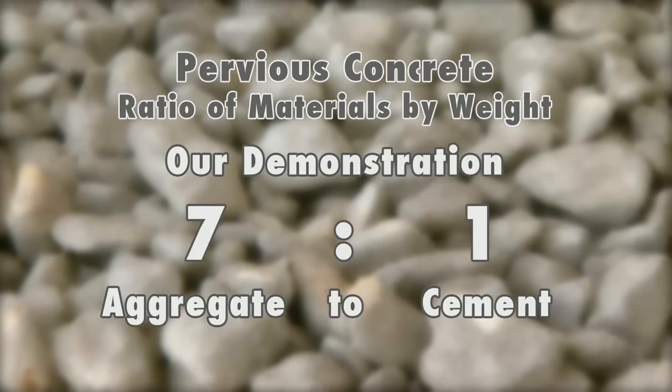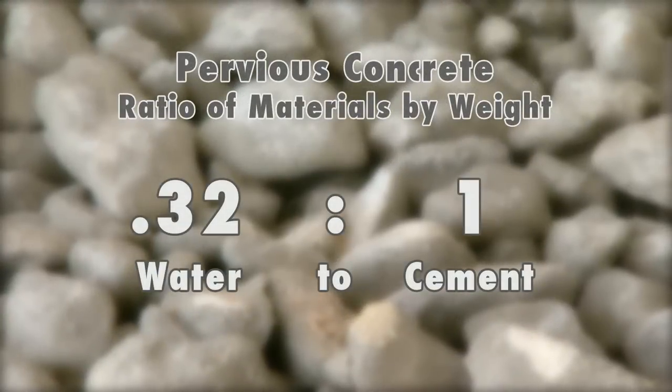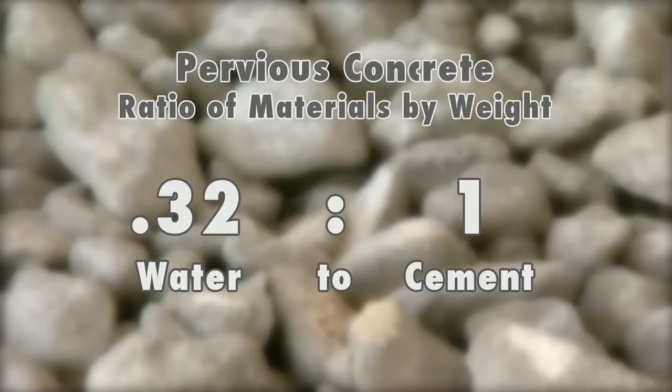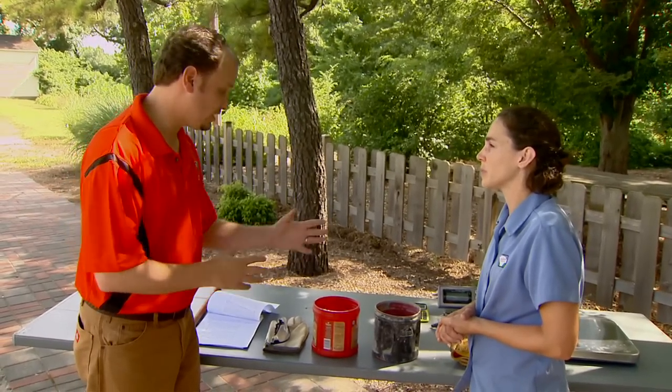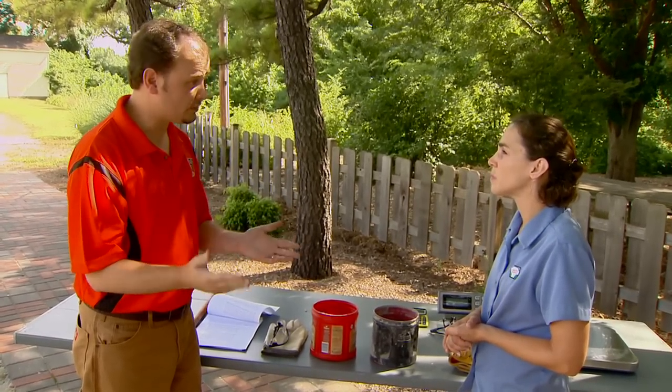So that's seven pounds of aggregate to one pound of cement. To measure the amount of water, we're going to have approximately 0.32 pounds of water per pound of cement. It's really important to get that amount of water correct, but it's a little bit of an art form. The ratio can go from about 0.27 to 0.34, but the Indiana Ready Mixed Concrete Association has recommended 0.32.